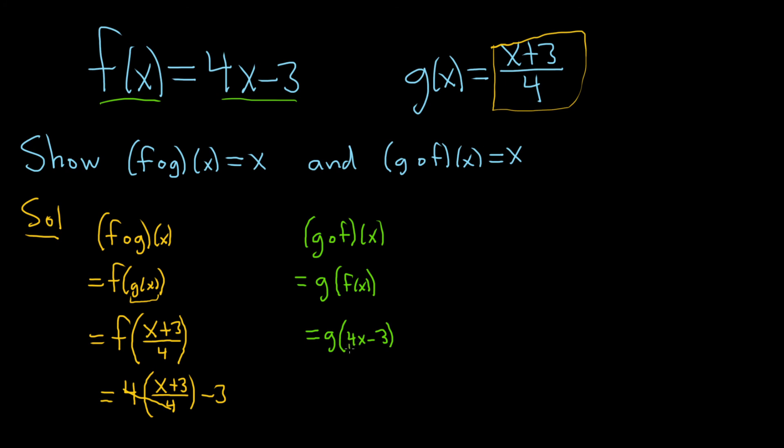So this whole thing here, this 4x minus 3, this is our x. Okay. So this is equal to x plus 3 but this is our x. So it's 4x minus 3. I'm going to put it in parentheses. That's our x plus 3 over 4. You see how that works? That whole piece there, that 4x minus 3 is our x. It's blah plus 3 over 4.